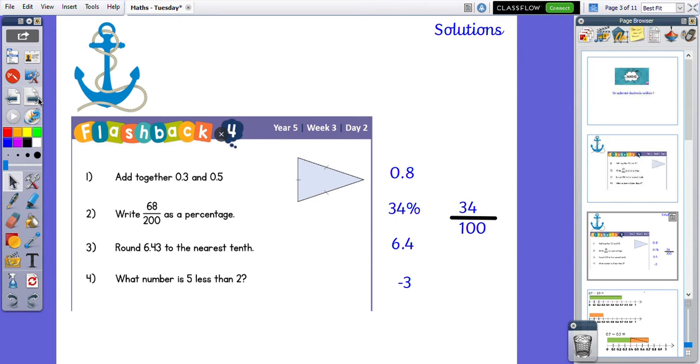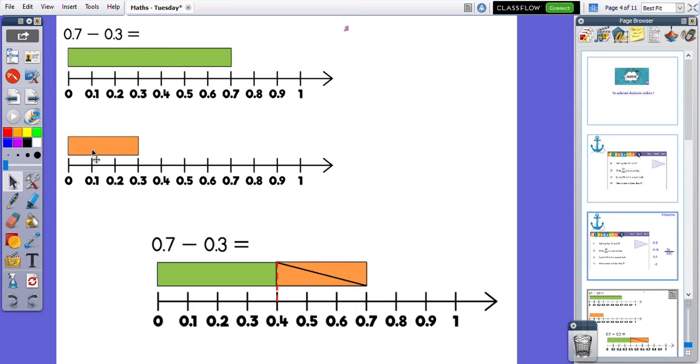Okay, so let's move on to today's learning. Yesterday you used these bars and joined them together. However, today you are going to take away this bar from this bar to give you the answer. As you can see here, the orange bar which represents 0.3 has been put on top of the green bar which represents 0.7 to show us how much of the green bar we would have left. We can see that we have subtracted 0.1, 0.2, 0.3. So that has now gone.